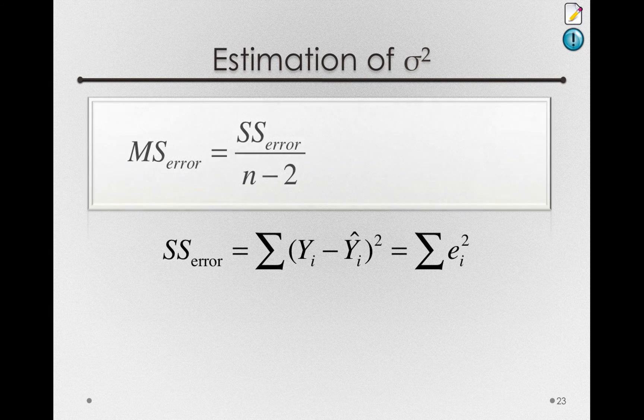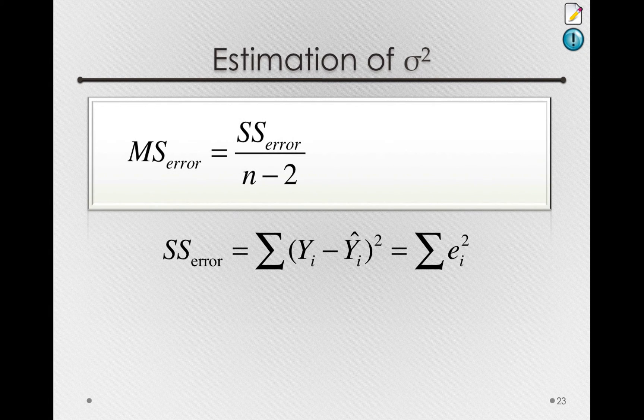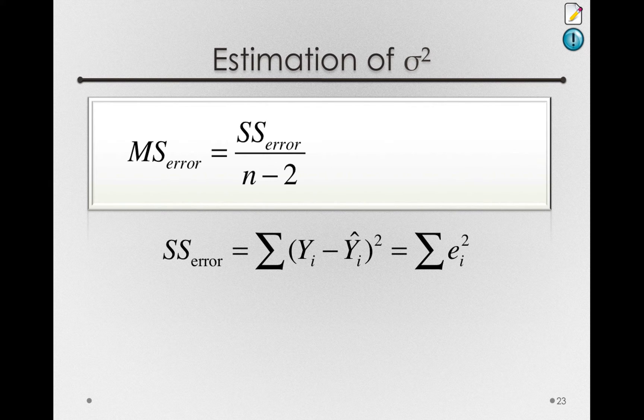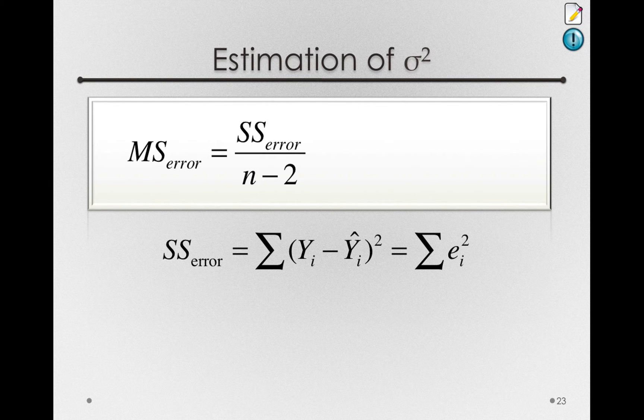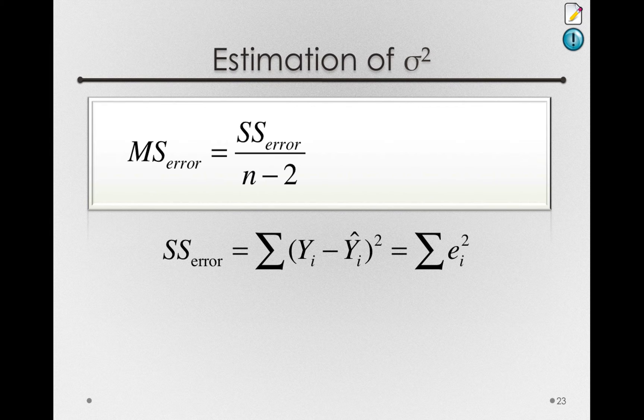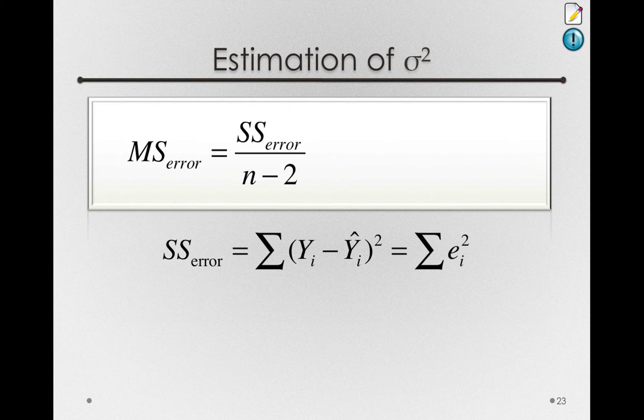Mean square error in our model will be formed on the basis of the sums of squares error. Specifically, sums of squares error divided by n minus 2, the degrees of freedom. Remember, we're estimating two parameters for this model.